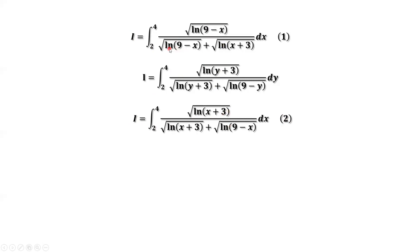They have the same denominator here. Therefore, we can consider equation 1 plus equation 2. This means we have I plus I equals 2I on the left hand side.